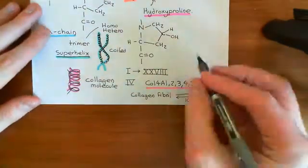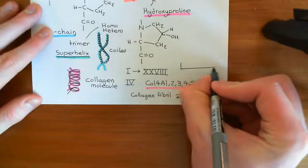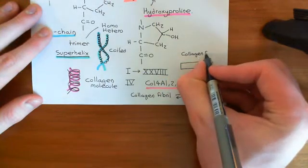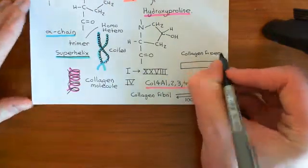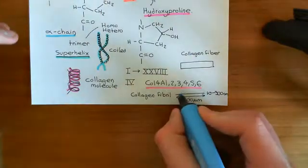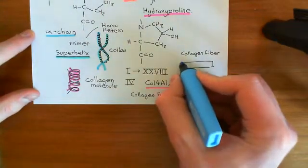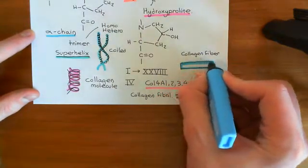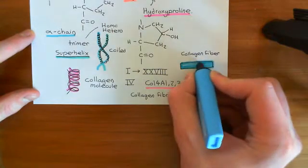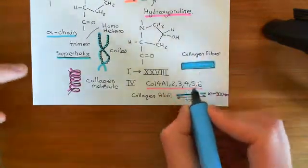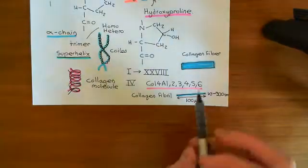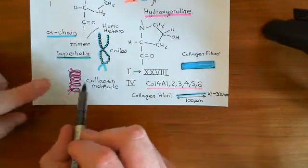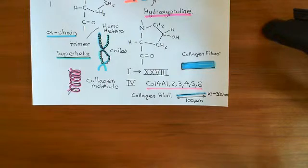Collagen fibrils can then aggregate into bigger structures yet, known as collagen fibers. Collagen fibers are actually visible with a light microscope. When you stain a piece of tissue with certain dyes, you will see swirling collagen fibers under the light microscope — aggregates of collagen fibers, which themselves are aggregates of collagen molecules, which are made up of three separate collagen polypeptides, also known as alpha chains.